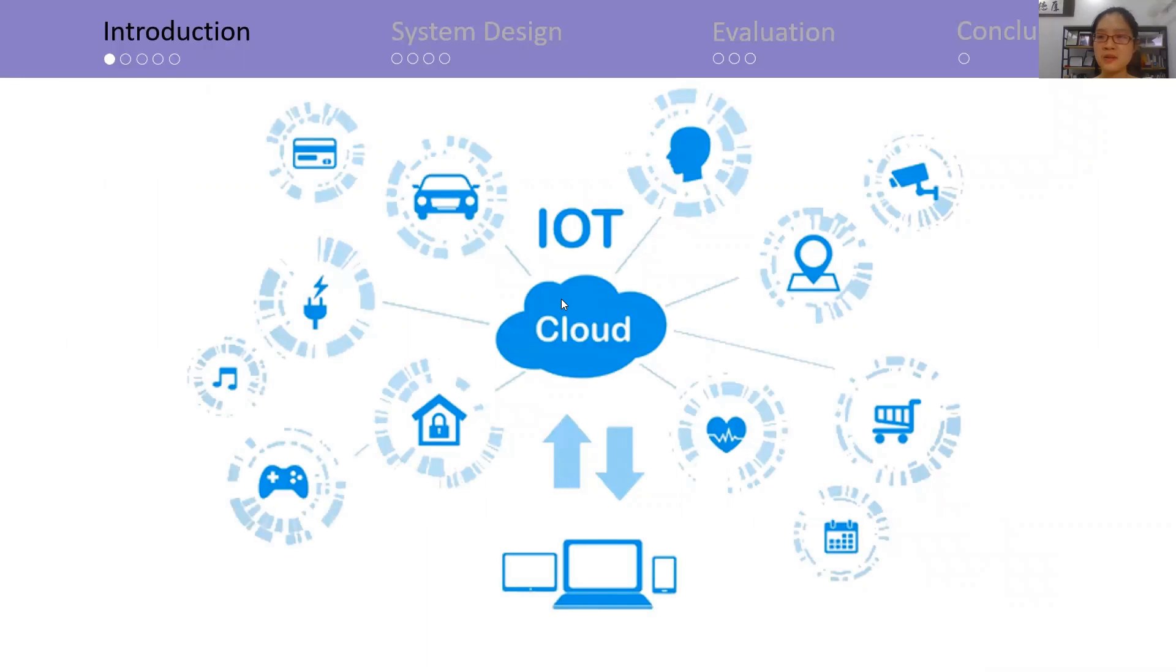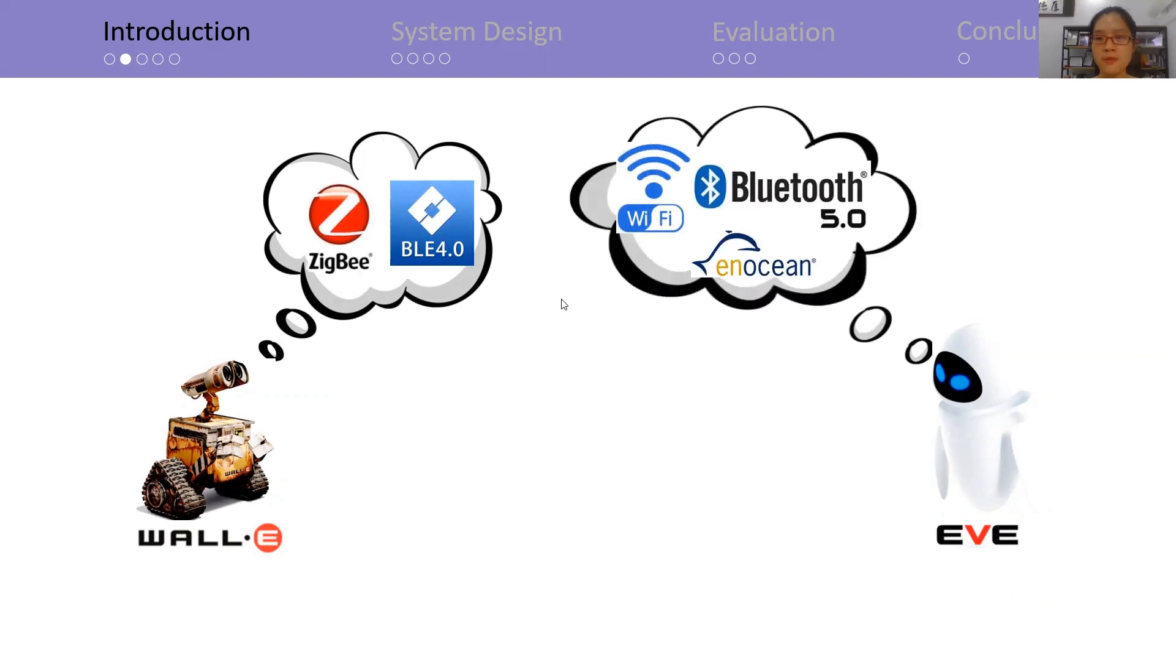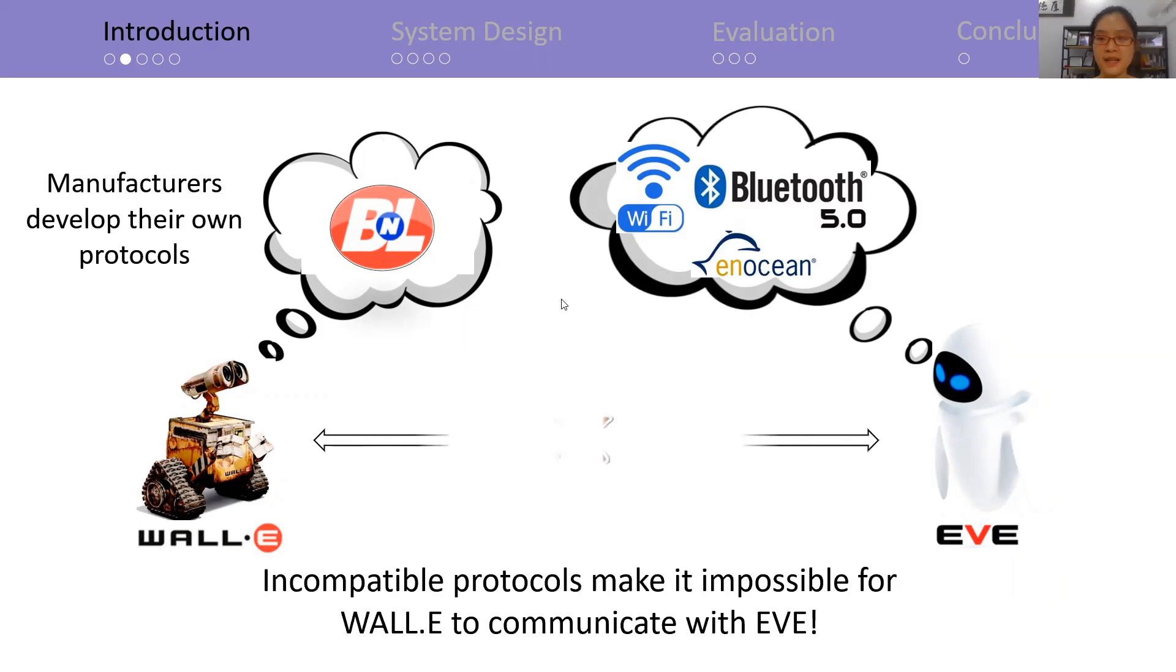Today, IoT has been widely used, but there are still many obstacles to such an everything-connected IoT network. We illustrate the problem with two robots. An old robot WALL-E meets an up-to-date robot EVE. WALL-E may just support several protocols due to its old age, for example, Zigbee or BLE. EVE may support different protocols. Even worse, WALL-E is likely to only support private protocols developed by its manufacturer. In this case, those incompatible protocols prevent them from chatting with each other.